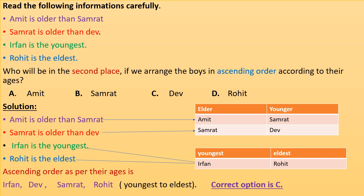The first two statements are Amit is older than Samrat and Samrat is older than Dev. For this I make a table. See table first. So from table 1 we can conclude that Dev is youngest among Amit, Samrat and Dev.